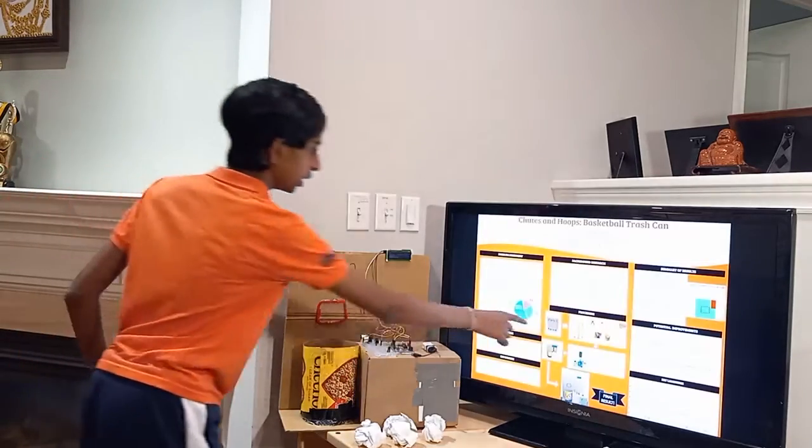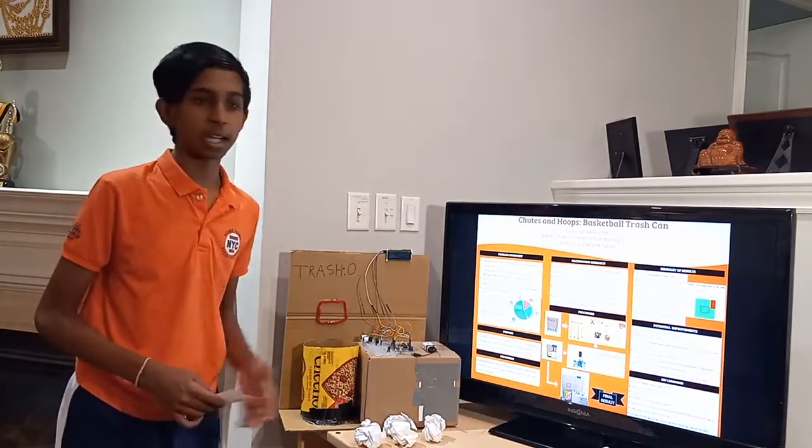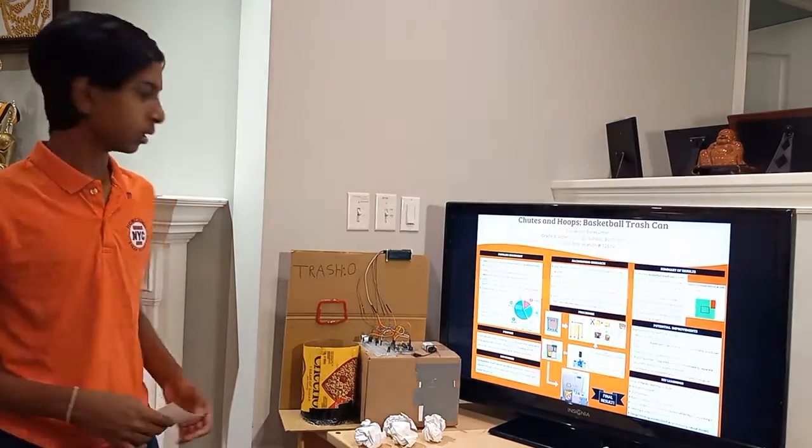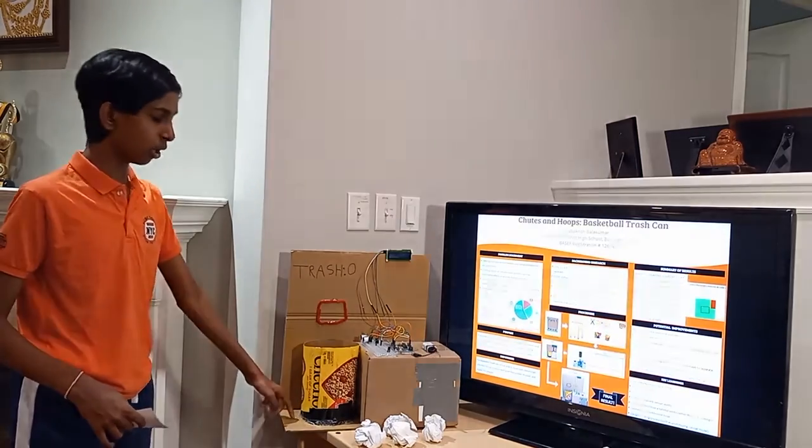Firstly, as you can see here, we built the cardboard supports. Then what I did is I cut up a Cheerios box, and I made it so that it would be like a can, and attached it using tape and hot glue.